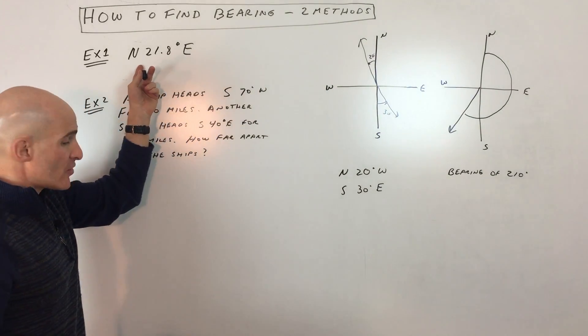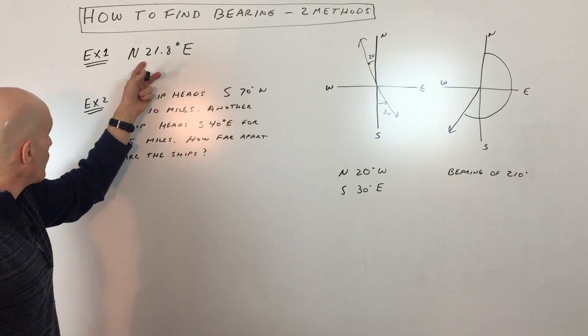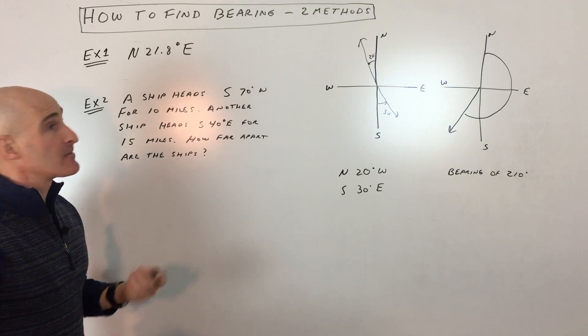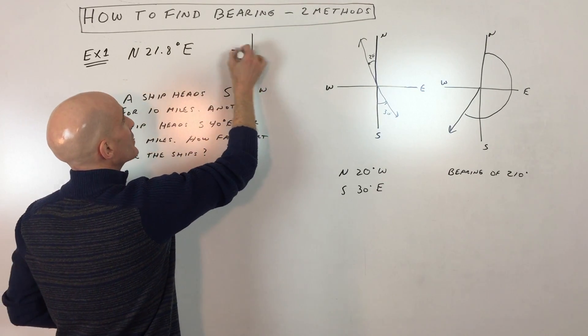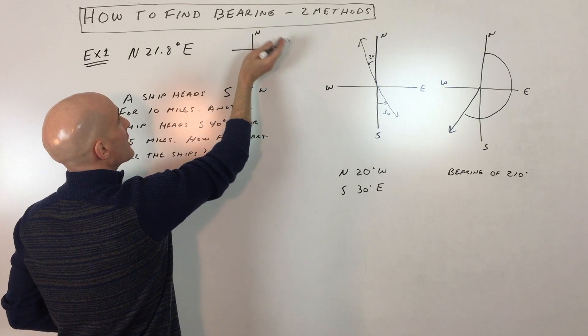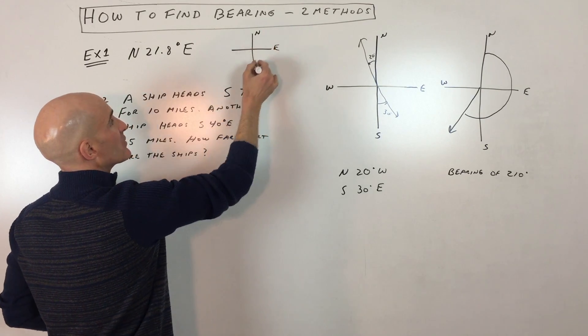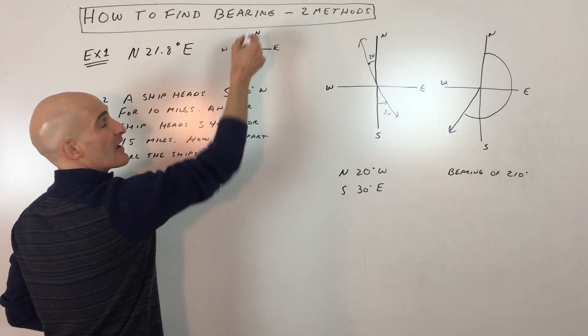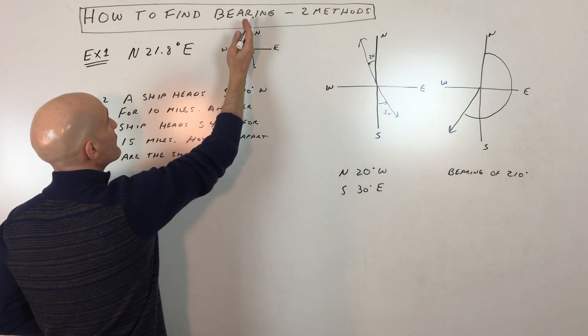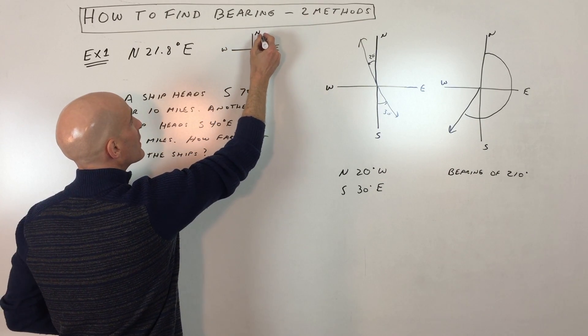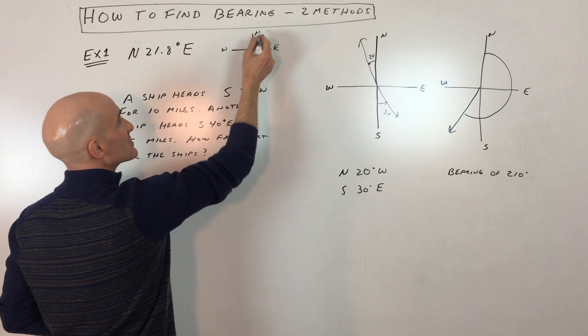So it says, say you're heading at north 21.8 degrees east. Okay, so this one is just saying, we're going to face north. We're going to head towards the east. Remember, never eat sour watermelon. You go in that direction like that. So start facing north and we're heading 21.8 degrees towards the east. So that's right there.